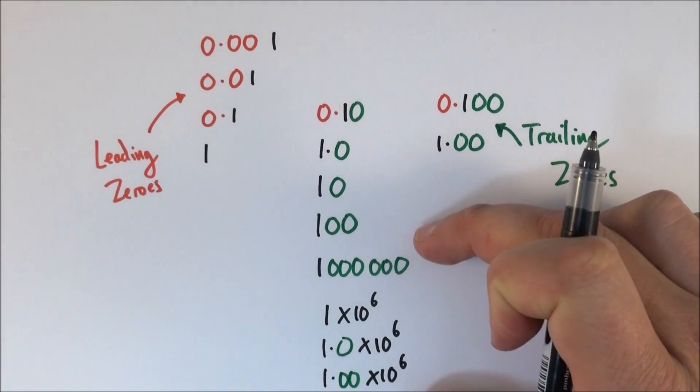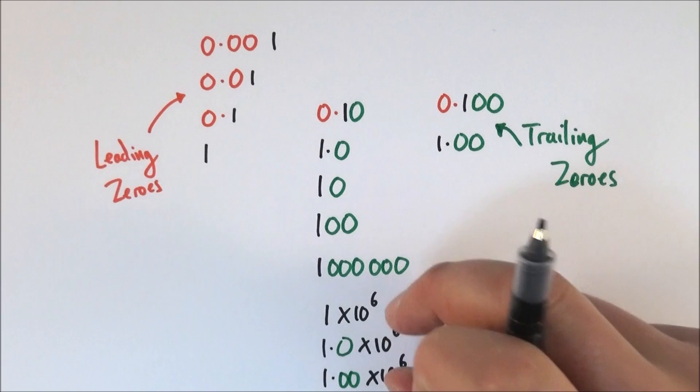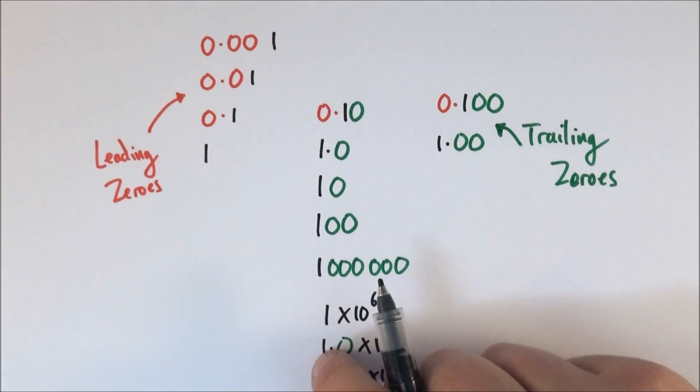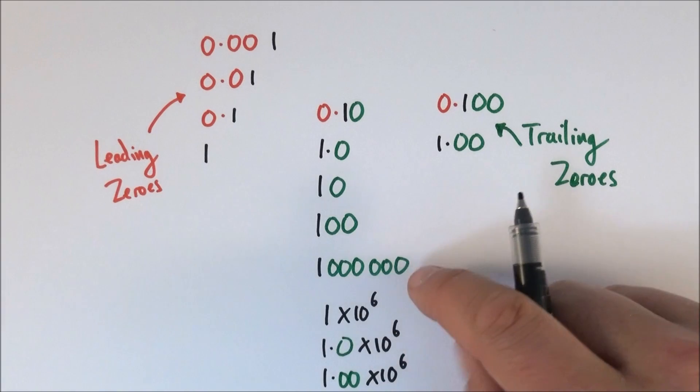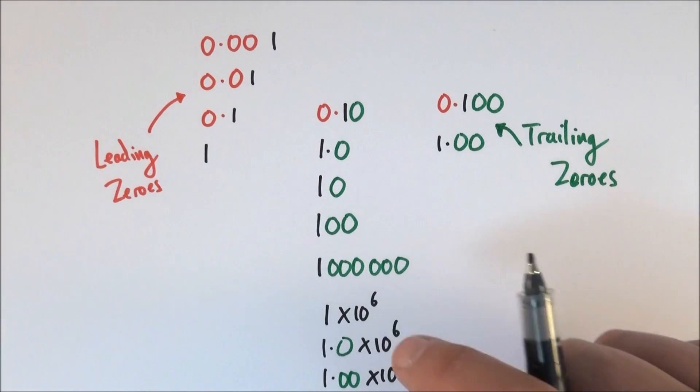Now all of these numbers here represent a million but by putting it in standard form we've got the first couple of digits which tell us how precise we know this number and then the digits or the numbers over here tell us the size of it.